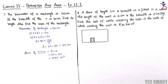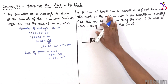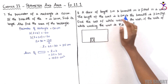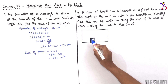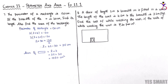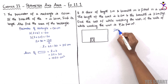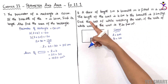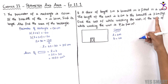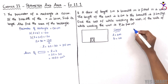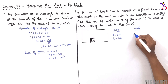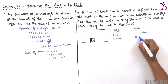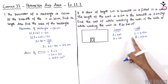Now let's move to the last sum. A door of length 2 meters and breadth 1 meter is fitted in a wall. The length of the wall is 4.5 meters and the breadth is 3.6 meters. We have to find the cost of whitewashing the wall.